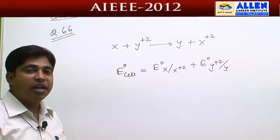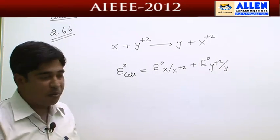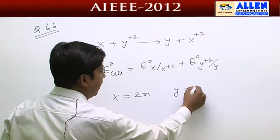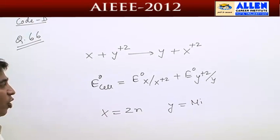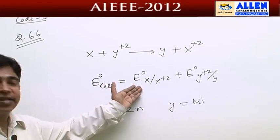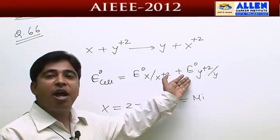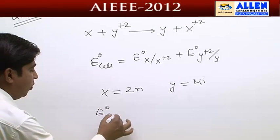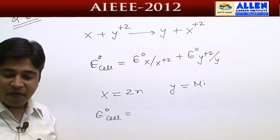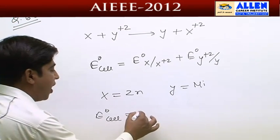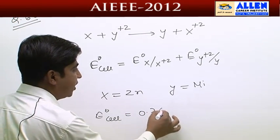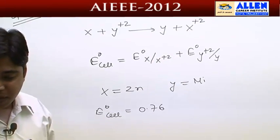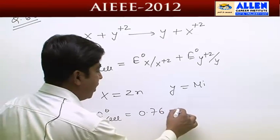According to the options, we need to calculate the first option. We want to calculate the value for zinc. The reduction potential value for zinc is minus 0.76, and for nickel it is minus 0.23.